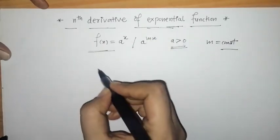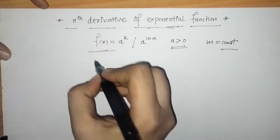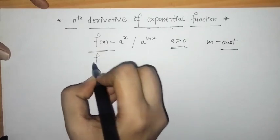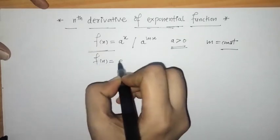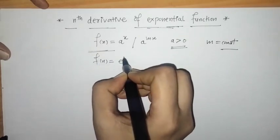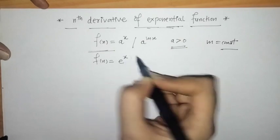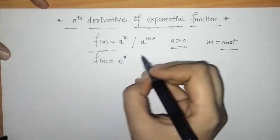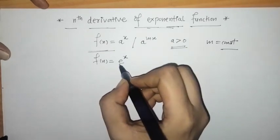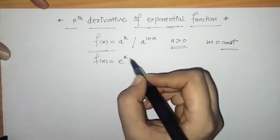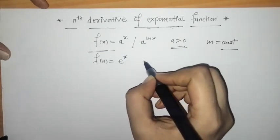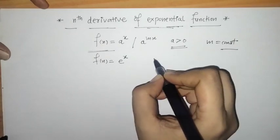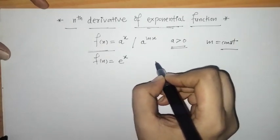The commonly used exponential function is f of x equals e raised to x, where e is called a transcendental number and its value is approximately 2.718.